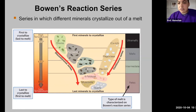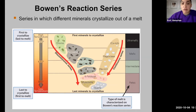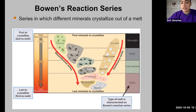Bowen's reaction series is a series that explains the order in which minerals will crystallize out of a melt. Igneous rocks are first created from some kind of melt, whether that is magma deep inside of the earth or lava on the surface of the earth, which will then cool into some kind of igneous rock.